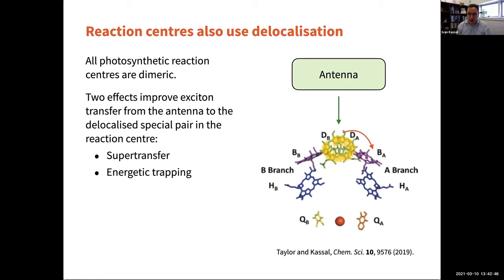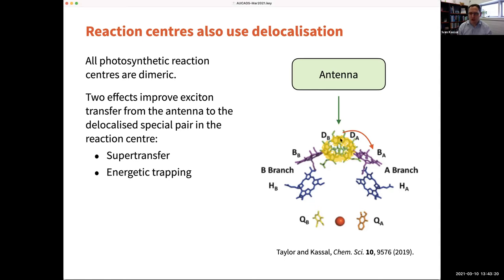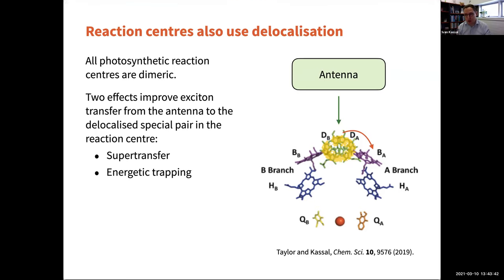The same thing happens in the reaction center. An ancient question is why all photosynthetic reaction centers are dimeric — they all have two branches with a special pair of two tightly coupled chlorophylls at the top. This causes delocalization within the special pair that changes the energetics and whether it can participate in super transfer. Our best guess of why dimerism evolved four billion years ago and hasn't gone away is because it enhances exciton transfer from the antenna, both by changing the energetic landscape and by using super transfer — enhancing trapping efficiency by up to a factor of two.